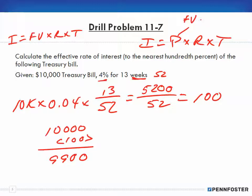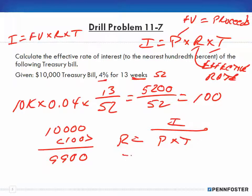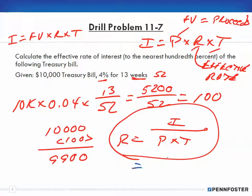Interest equals principal times rate times time. Principal we had been calling face value — now we can also call it proceeds. Rate is not just an interest rate; it can also be called an effective rate. Since we want to find the rate, we rearrange: rate equals interest divided by whatever is left in the denominator.